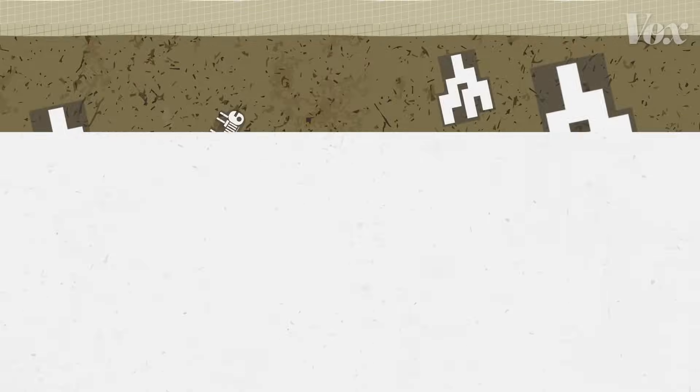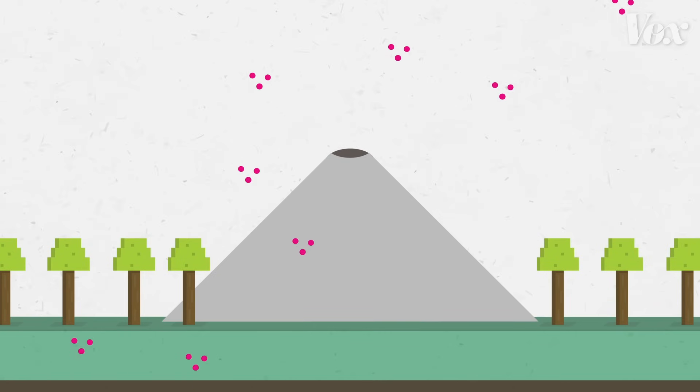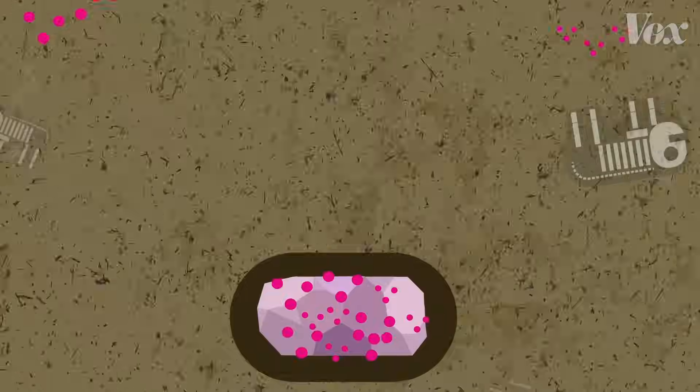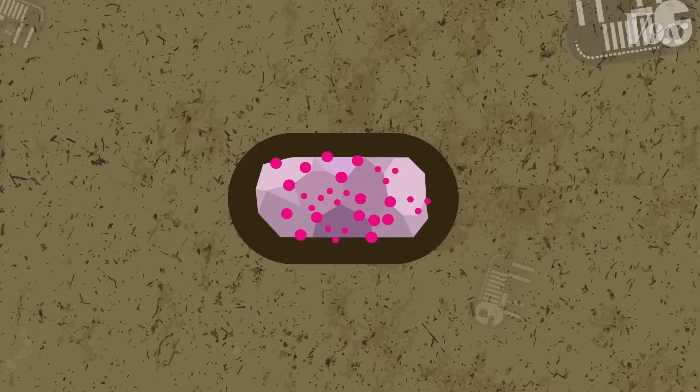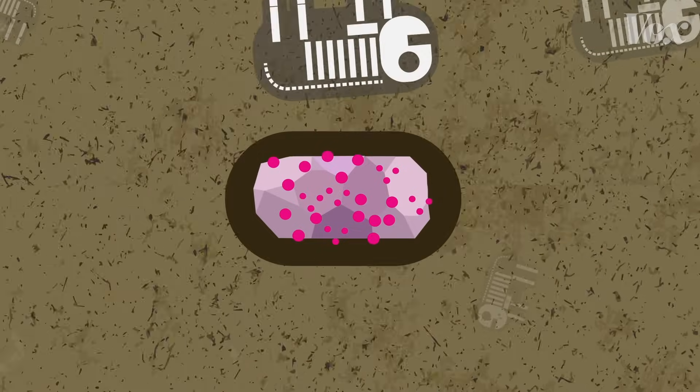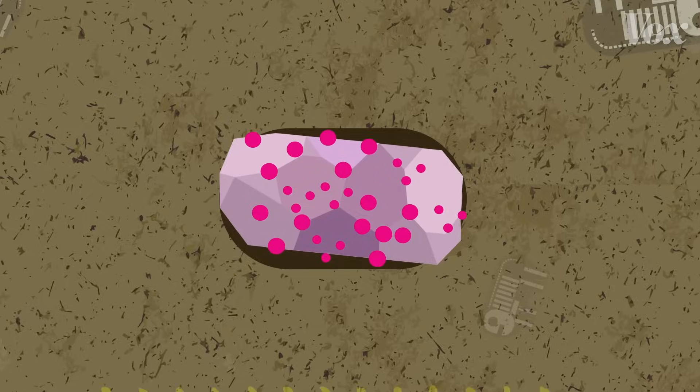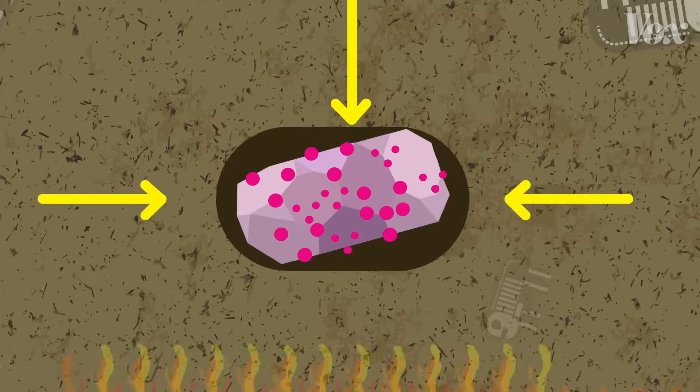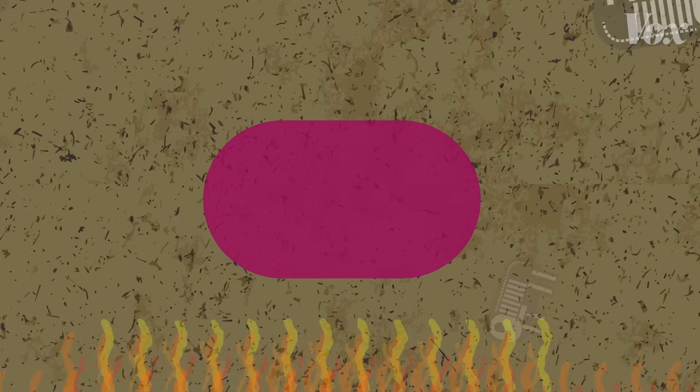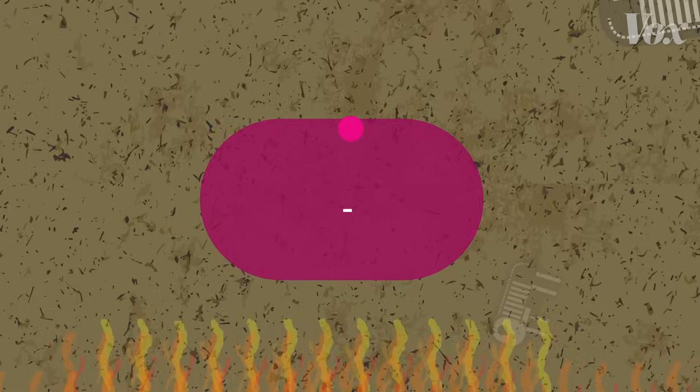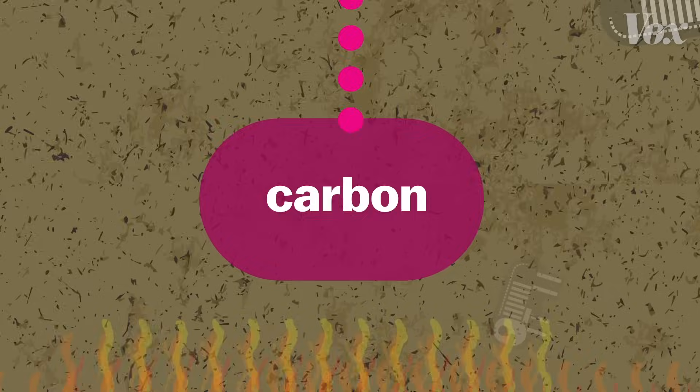Some of that carbon will eventually get back to the atmosphere. But some of it normally stays in the ground. Usually, dead things decay and turn into rocks. Eventually, they are crushed, and the extreme heat and pressure causes them to melt and emit the carbon, which is trapped underground.